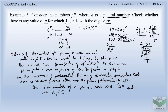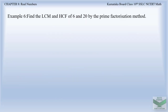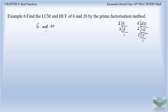Now let us start with example number 6. The question is: find the LCM and HCF of 6 and 20 by prime factorization method. So we have to factorize 6 and 20. Factorizing 6: 2 threes are 6, so 6 is 2 into 3. Factorizing 20: 2 tens are 20, 2 fives are 10. So 20 is 2 into 2 into 5, which can be written as 2 squared into 5.